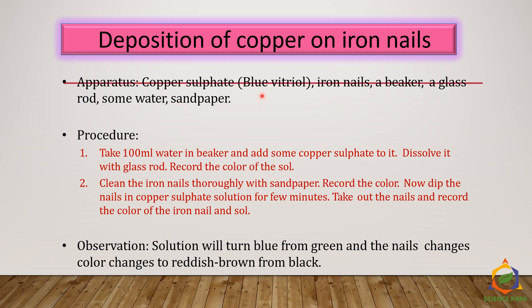We will need copper sulfate — a blue vitriol — iron nails, a beaker, a glass rod, some water, and sandpaper. Take 10 ml of water in a beaker and add some copper sulfate crystals into it. Dissolve it with a glass rod and record the color of the solution, or keep some solution in a test tube aside. Now clean the iron nail thoroughly with sandpaper, record the color, and then dip the nail in copper sulfate solution for a few minutes.